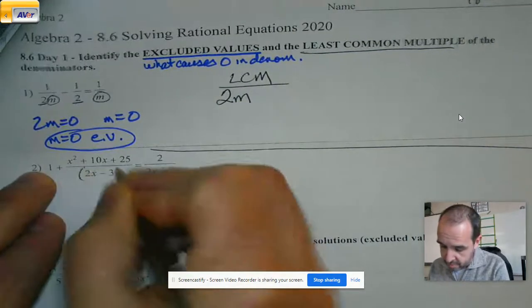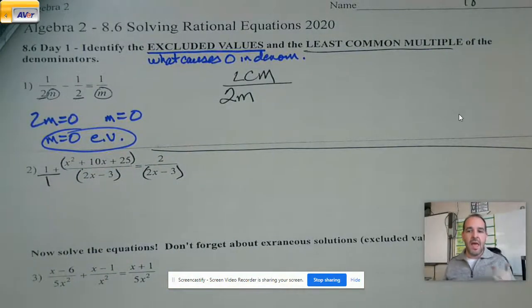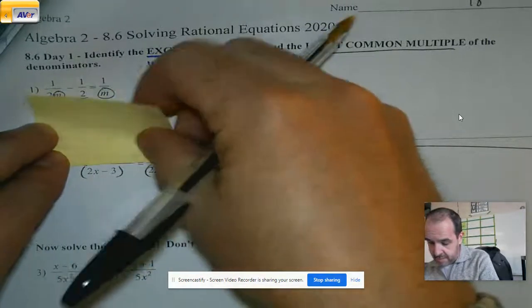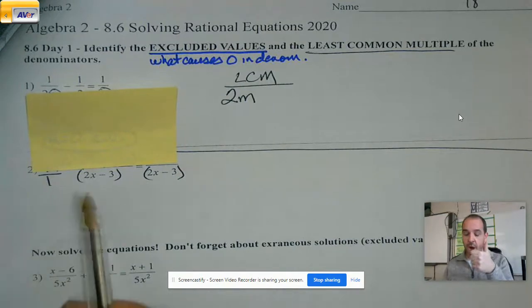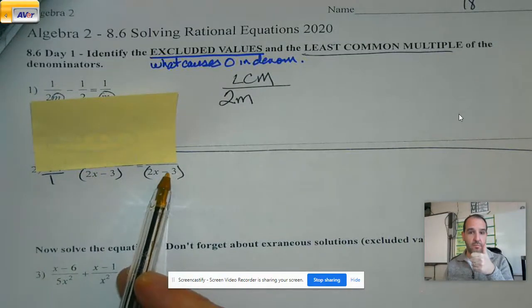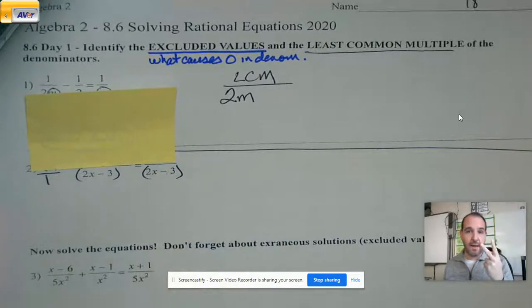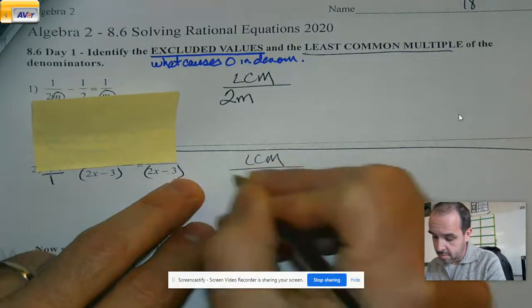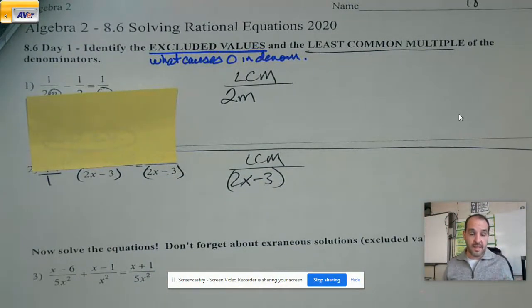When we're looking at coefficients, if there are multiple ones, we can use the graphing calculator. But we want the smallest number that all the coefficients divide into. We want the largest exponent for each base. So if there's only one variable, we just take the biggest exponent we see. And then any set of parentheses that is different. Even after we factored, if we need to, we're going to include. So here, it would be 2m. That's it.